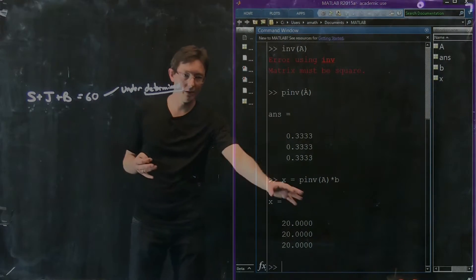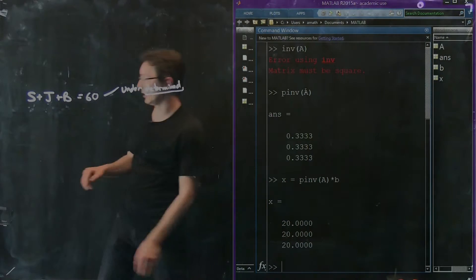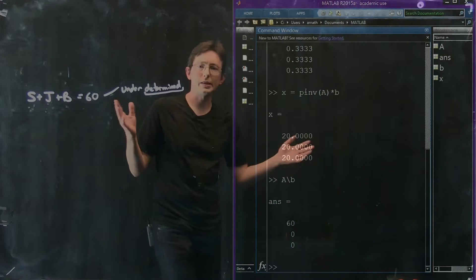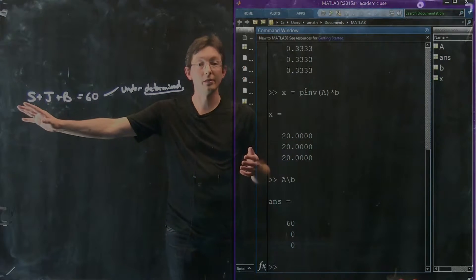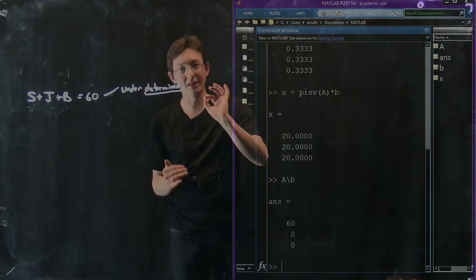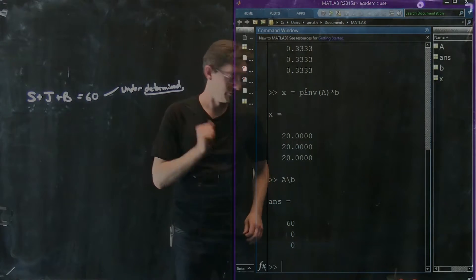So this is kind of interesting. The pseudo-inverse gives me one solution. A backslash B gives me another solution. That's totally fine because this is an underdetermined system and there are infinitely many solutions because I haven't given it enough information to uniquely determine a solution.